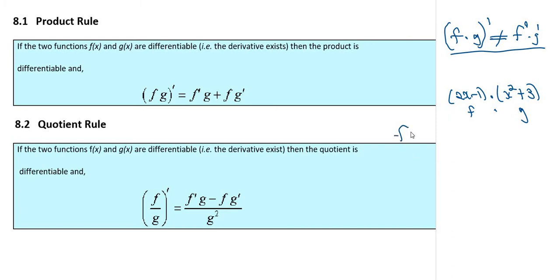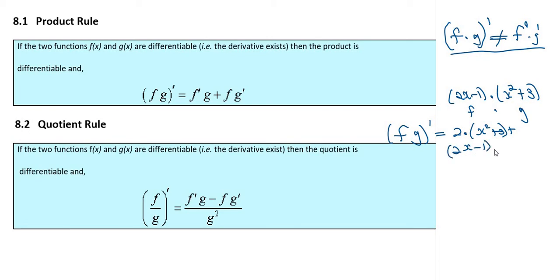Applying this to our example: (fg)' equals the derivative of the first function, which is just 2, multiplied by the second function x squared plus 3 as it is, plus the first function 2x minus 1 times the derivative of the second function, which is 2x.